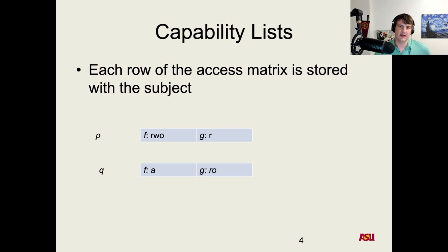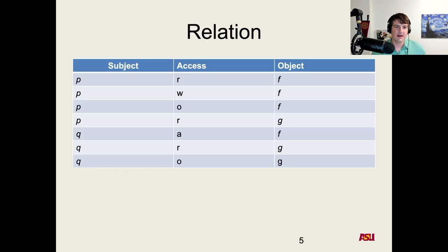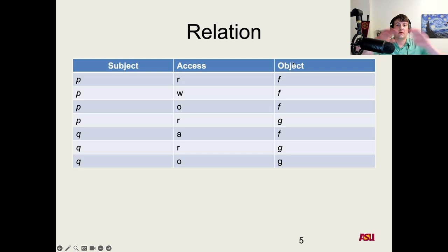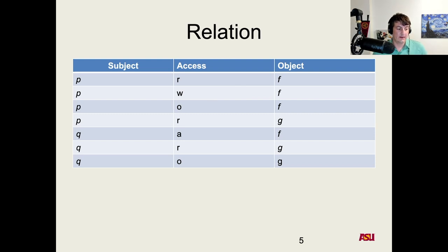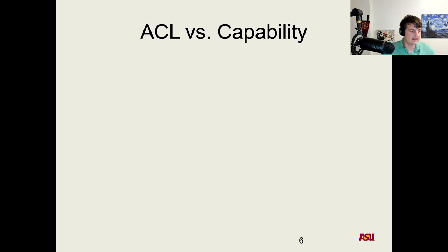These are the two main ways access control is implemented. There's also a third approach: storing a three-tuple — a set of three elements — containing the subject, the access type, and the object. This breaks out each cell in the table individually, so rather than sets per row or column, you say subject P has access R to object F. Depending on implementation, you can think of storing this in a database of who has access to what.